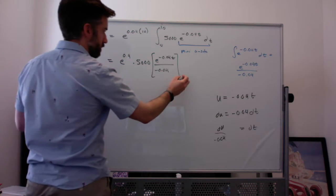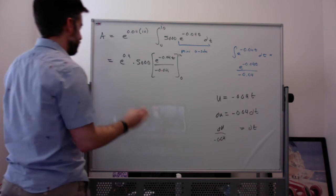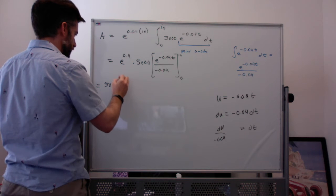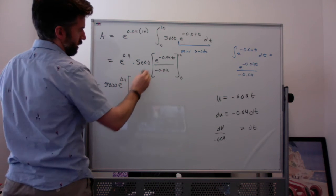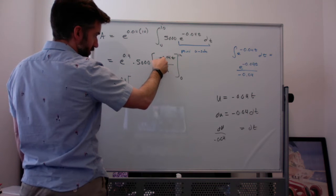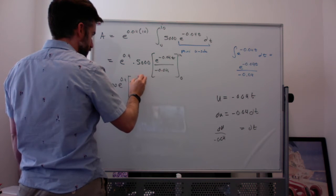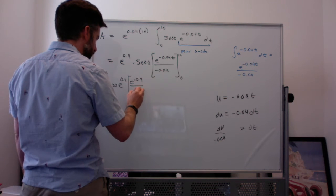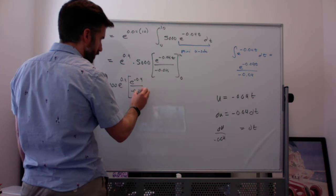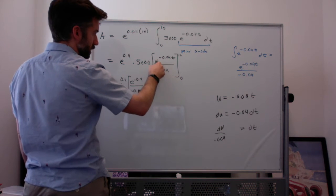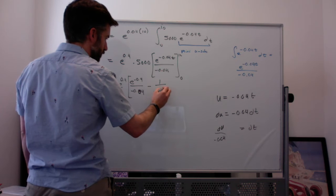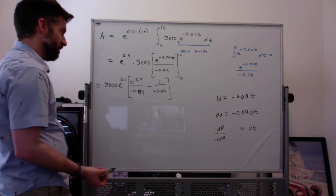Alright, and then we're going to plug in 0 and 10. So what we've got? We've got 5000 times E to the 0.4 times this to the plug in 10. Plug in 10, I'm going to get E to the negative 0.04 divided by negative 0.04. Sorry, 0.04 on the bottom. Minus plug in 0, E to the 0 is 1. And that's what we get.